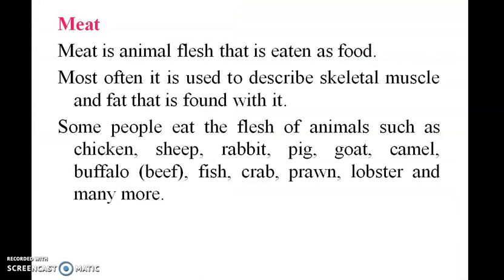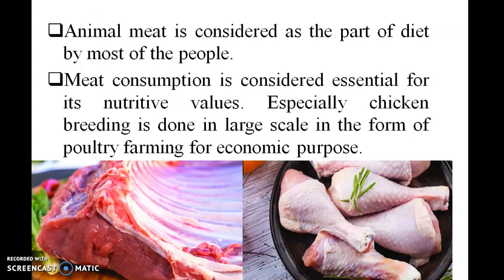Meat is an animal flesh that is eaten as food. Most of it is used to describe the skeletal muscle and fat that is found with it. Some people eat the flesh of animals such as chicken, sheep, rabbit, pig, goat, camel, buffalo, fish, crab, prawn, lobster, and many others. Fish and animal meat is considered part of the diet by most people.